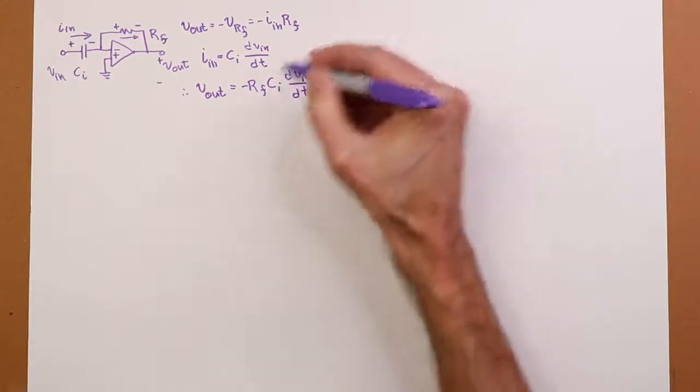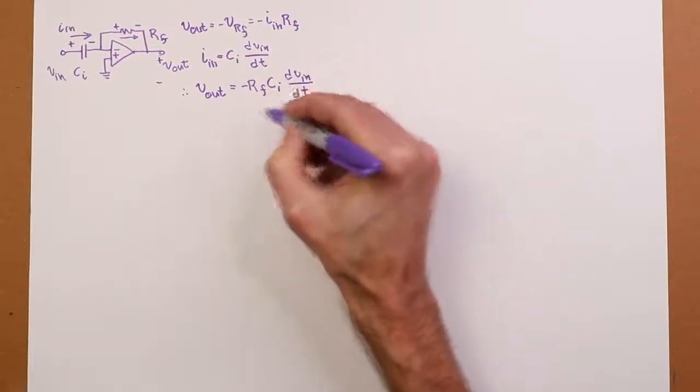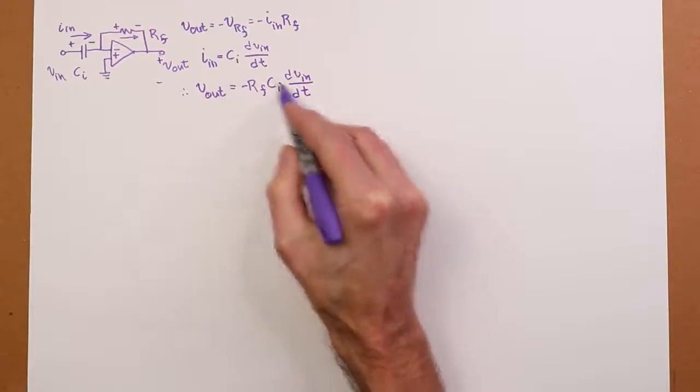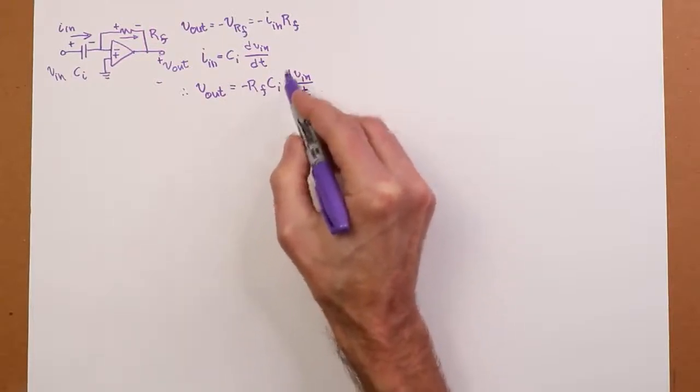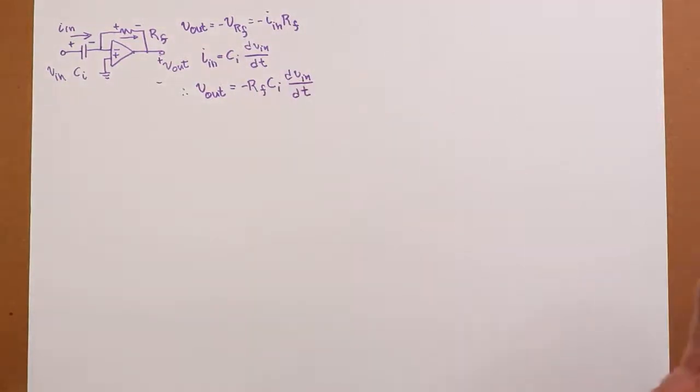So it's the slope, the derivative, of the input voltage scaled and inverted. There's this R_F C_I scaling factor, and then the inversion, but basically it gives us the slope.